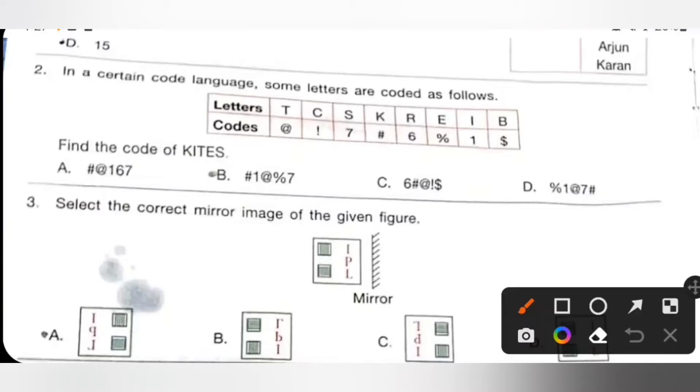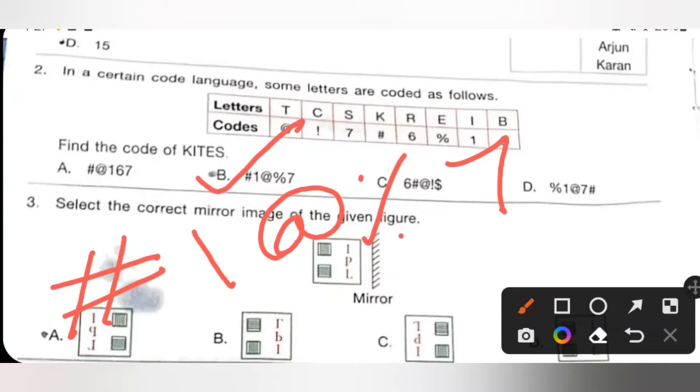Second one: In a certain code language, some letters are coded as follows. Find the code of kites. So for K, hash symbol, and then for I, 1, then T, add symbol, and then E percentage, S 7. So option B is the correct answer.